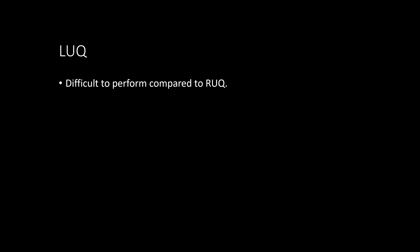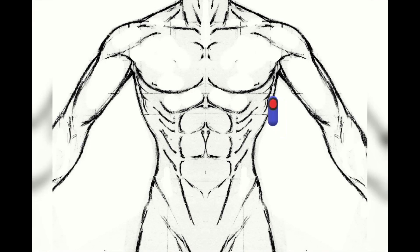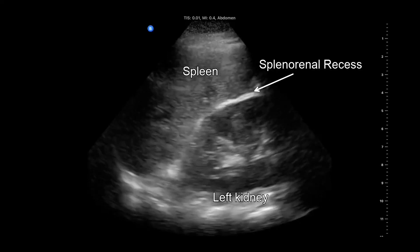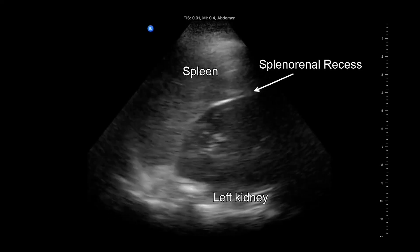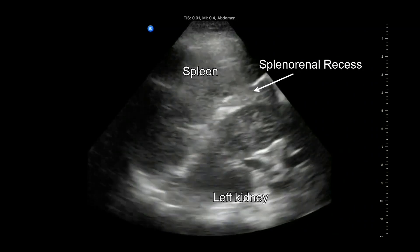The left upper quadrant or perisplenic view can be challenging to obtain because the spleen does not provide as large a sonographic window as the liver, and the examiner frequently needs to reach across the patient to access the left upper quadrant. Ideal placement of the transducer is generally more cephalad and posterior than in the perihepatic view. A good starting point is the posterior axillary line at the 9th and 10th intercostal space. Free fluid in the left upper quadrant collects differently than in the perihepatic area, primarily because the phrenicocolic ligament restricts fluid from filling the splenorenal interface.